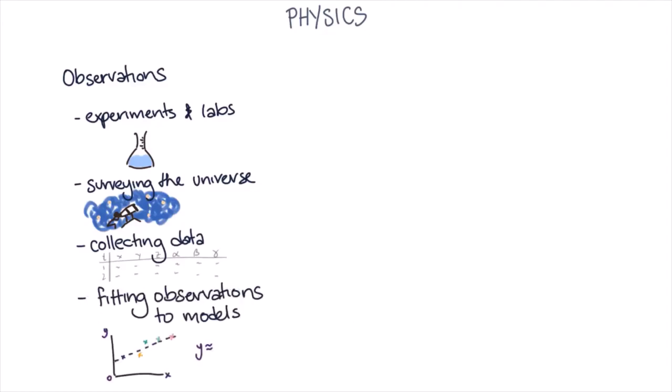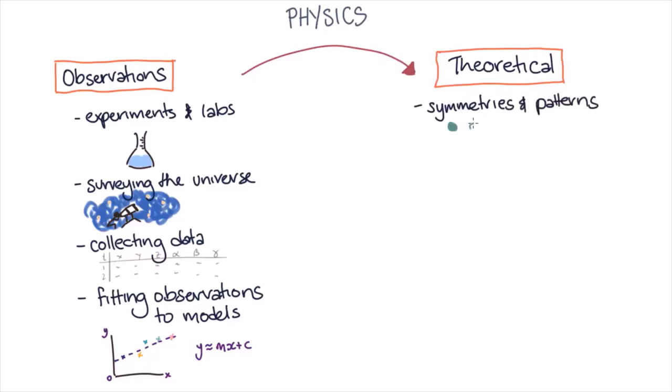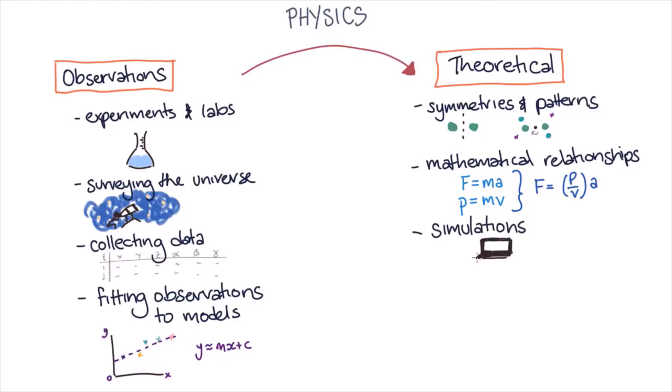But what physics through observations can't tell us is why the world is acting this way, and this leads us to physics through theory. Theoretical physics can include looking at symmetries and deeper patterns, understanding mathematical derivations and relationships, doing simulations, and gaining a more fundamental understanding of physics concepts.